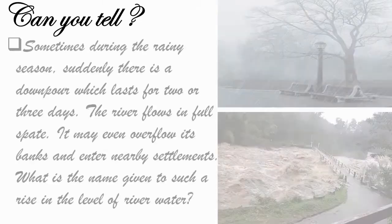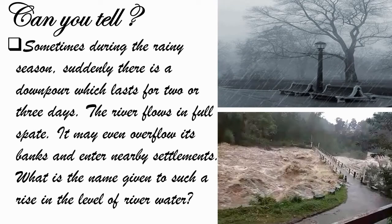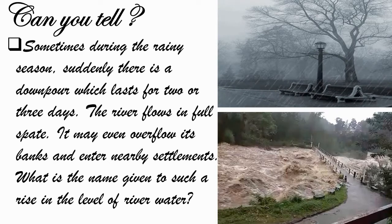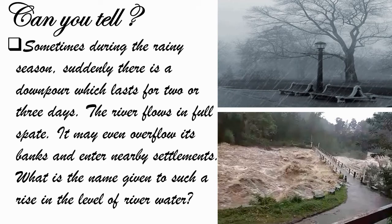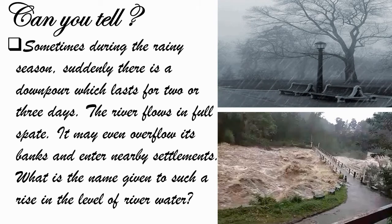Can you tell — sometimes during the rainy season, suddenly there is a downpour which lasts for two or three days. Downpour means heavy rains. You can see the image — it is raining heavily and there is a flood. The river flows in full speed; see how the river is flowing in full swing. It may even overflow its banks and enter nearby settlements. What is the name given to such a rise in the level of river water?